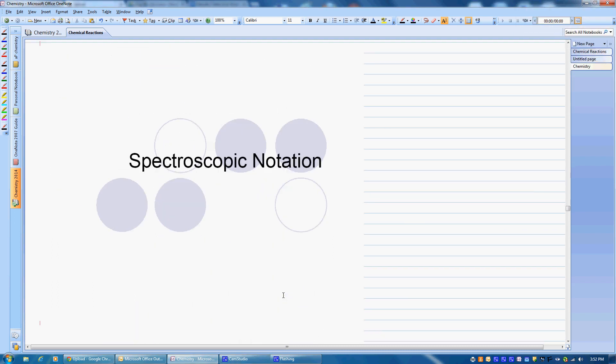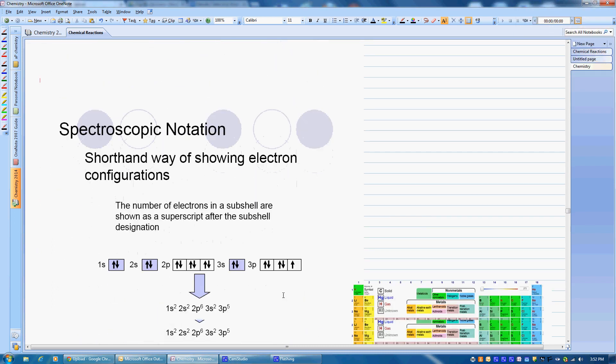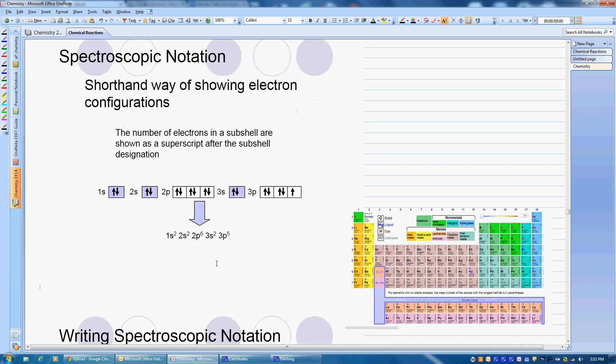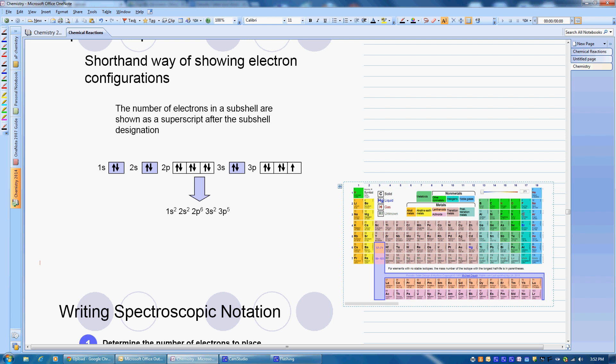So now we're going to look at the spectroscopic notation, which we've been doing kind of along the way also. It's pretty much just writing our notations without these boxes. So with the boxes, a lot of times you don't see the subscripts. It doesn't matter to me if you write them or not, but the electrons are shown here with the arrows. Spectroscopic, we don't have the boxes and arrows, and so everything is shown just with our notation here. So if we take that chlorine, again, 17 electrons, we would write it just like this.